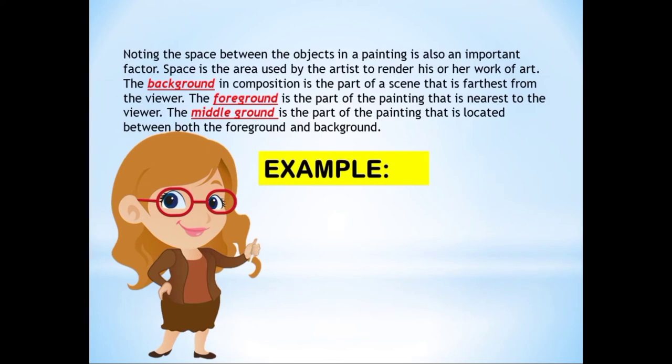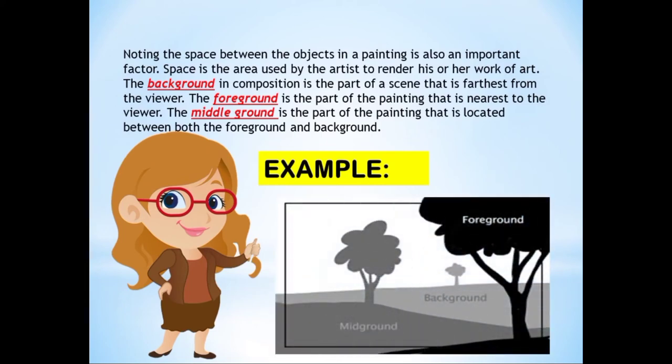Noting the space between the objects in a painting is also an important factor. Space is the area used by the artist to render his or her work of art. The background in composition is the part of a scene that is farthest from the viewer. The foreground is the part of the painting that is nearest to the viewer, and the middle ground is the part located between both the foreground and the background.